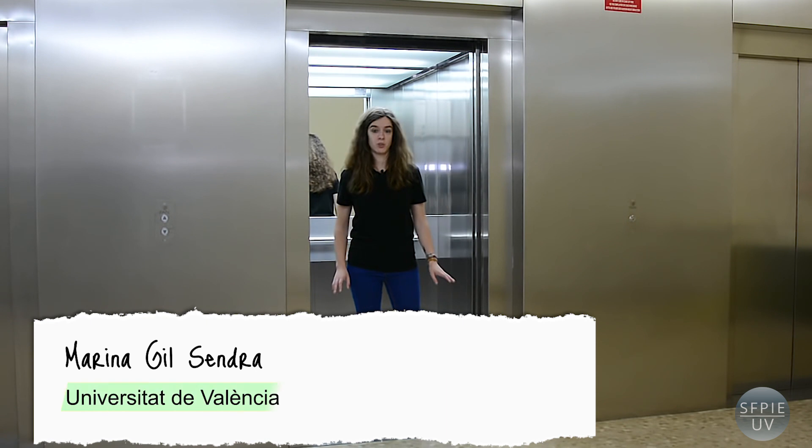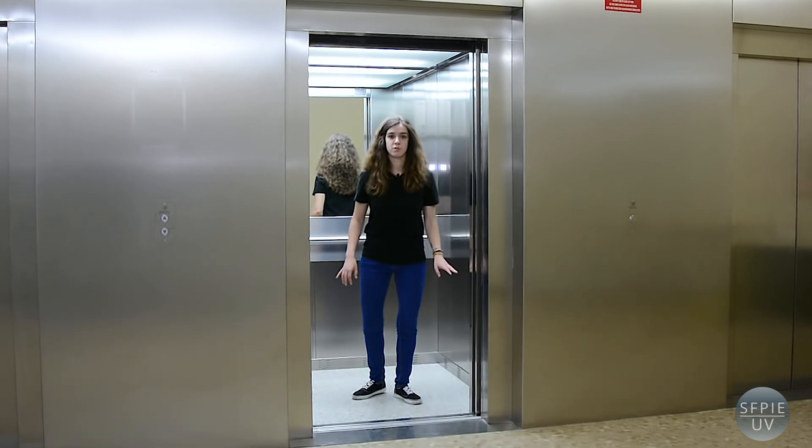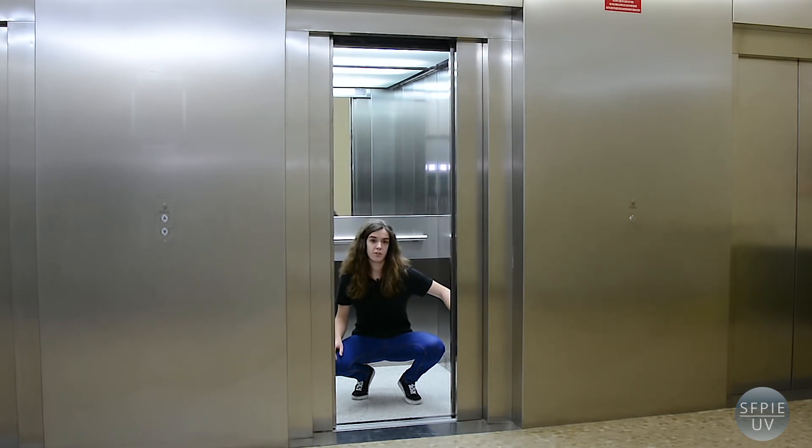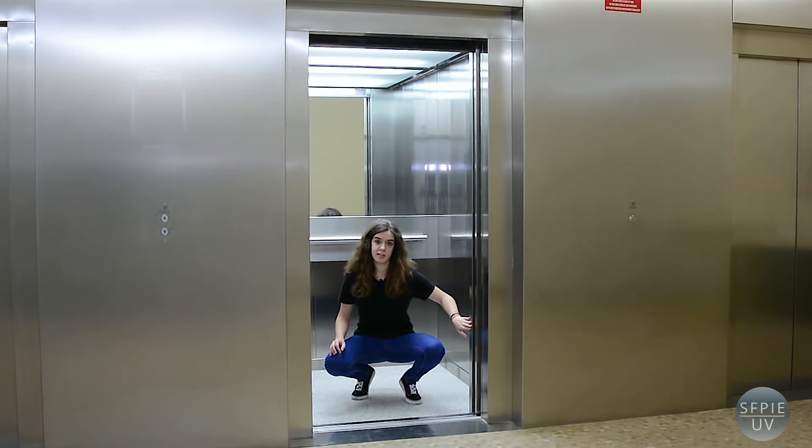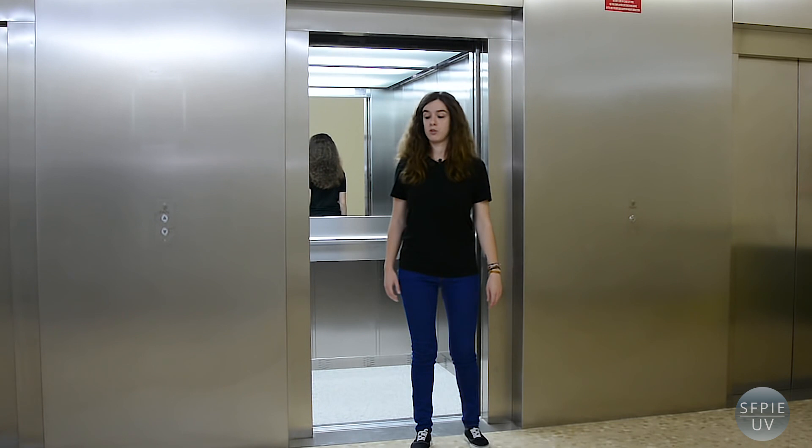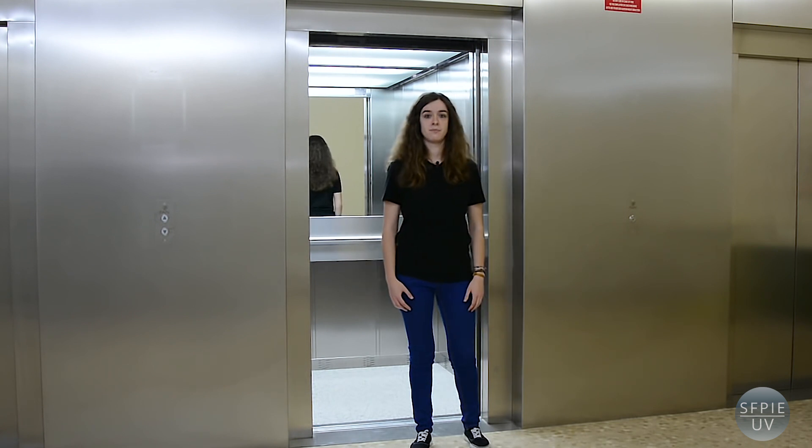The elevator door doesn't close while I'm here, but it does if I step back. Why? The door remains open because the beam of non-visible light that goes from this side to the other side is interrupted. The beam of light regulates an electrical circuit that controls the closing of the door. That's why if I exit and let the beam of light reach the other side, the door closes.